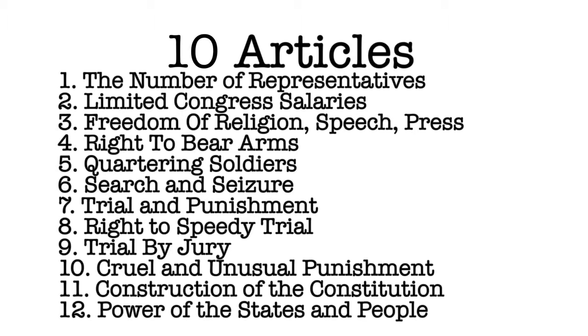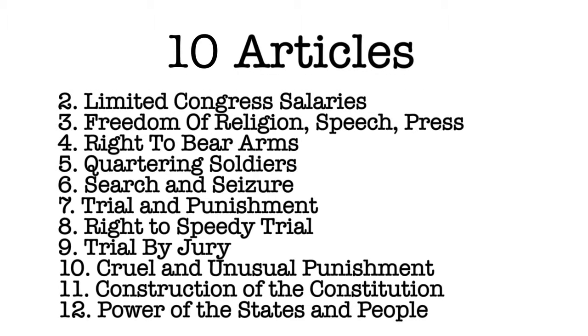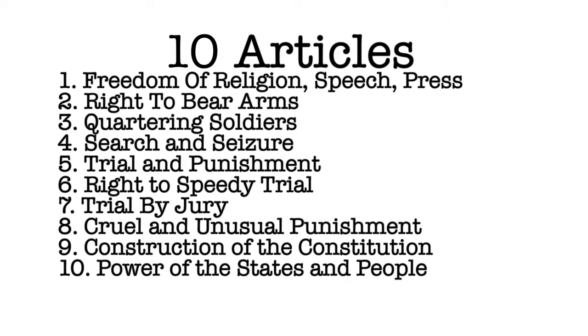Originally, 12 articles were proposed, but only the last 10 were ratified by the states. The articles not originally included were Article 1, which dealt with the number of U.S. representatives, and Article 2, which limited the power of Congress to increase its own salaries — which was eventually added as the 27th Amendment.